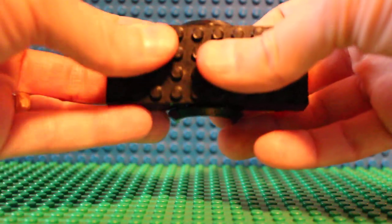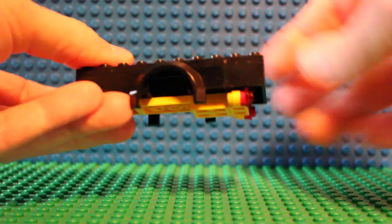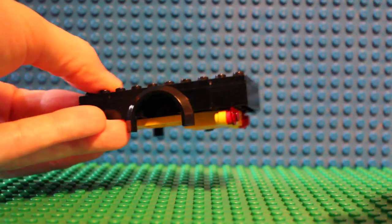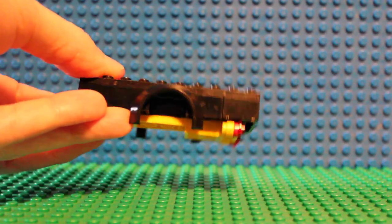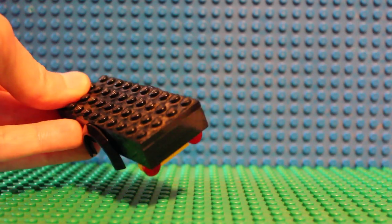First we're going to snap the top part of our bed on. And there's where you can see that if you had a two by ten here it would just move those headlights closer to the edge. We like having a little bit of a lip there.